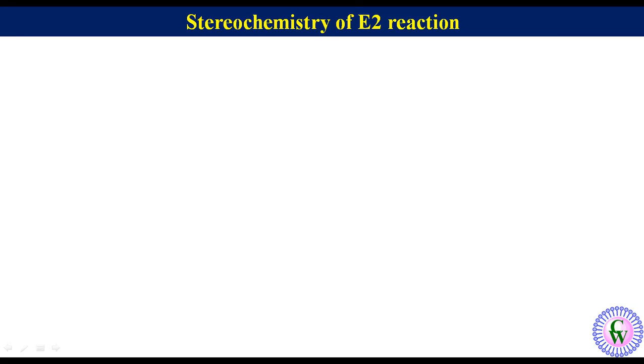Hello friends. Today we are going to discuss stereochemistry of E2 reaction. In an E2 reaction, a substrate with a leaving group X and at least one beta hydrogen in the presence of a base undergoes elimination to produce an alkene.